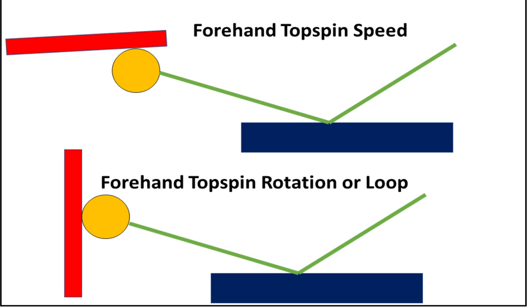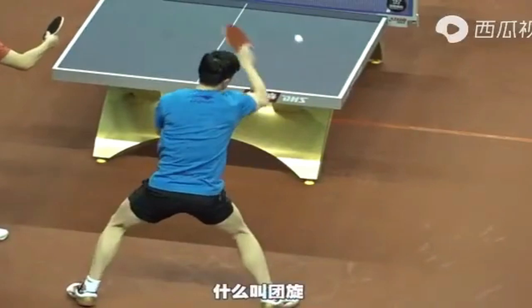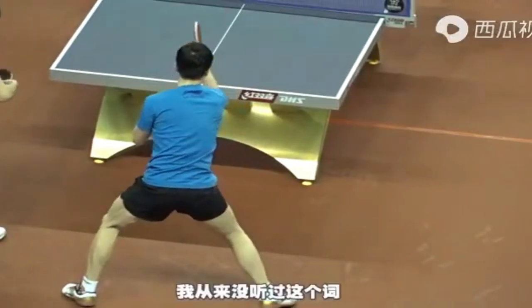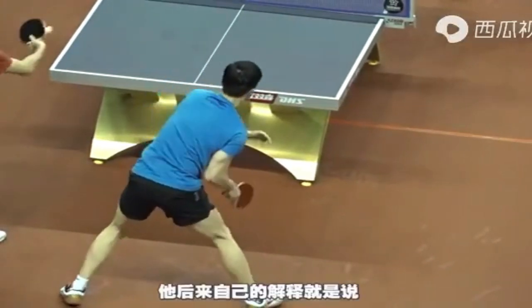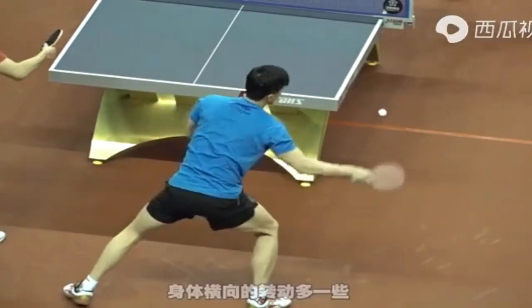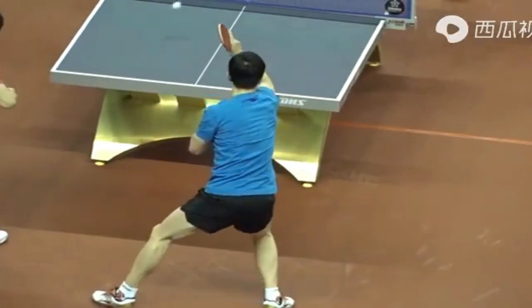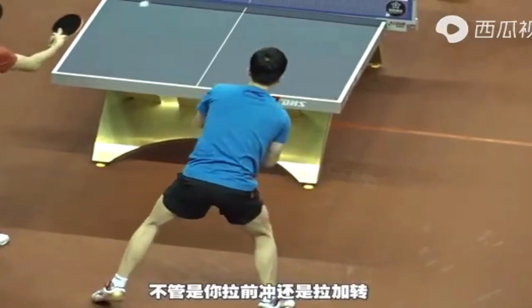Welcome to your channel of biomechanics applied to table tennis. In this video, courtesy of the channel All Classical Table Tennis of Chinese origin, we are going to analyze the difference between the forehand topspin with greater rotation — called 'loop' in Europe — and the forehand topspin of speed.